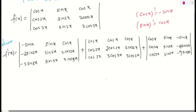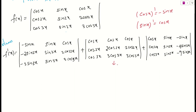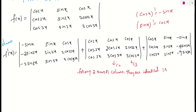If you check carefully, in the second determinant, column 2 and column 3 are completely identical. Remember the condition: if any two rows or any two columns are identical, then the determinant equals 0. So that entire second determinant is 0.